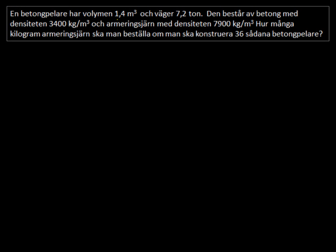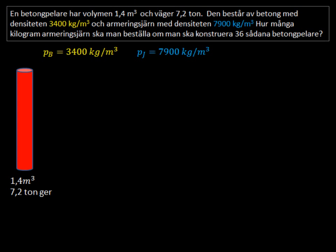We have a column made of cement and iron, and there's a volume for the column, 1.4 cubic meters, and it has a mass, 7.2 tons. Now, our problem is going to be how much iron do we need in kilograms to make 36 such columns. Now, we're given other information. I'm going to tidy this up a bit, and let's draw a picture.